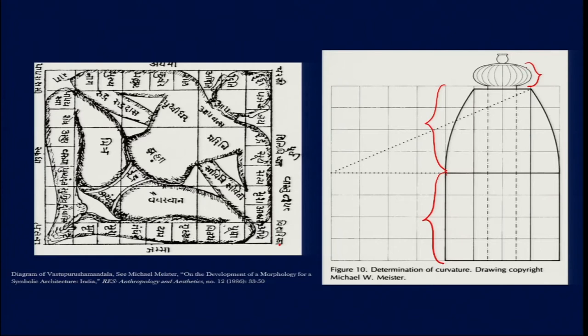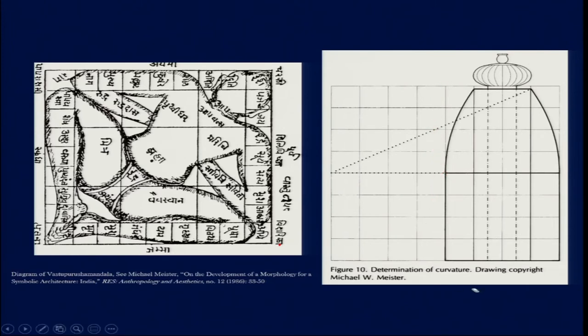On top of the shikhara we have a corbelled stone called the amalaka, which marks the space of the axis mundi. On top of that we usually find a kalasha, or finial. The kalasha is a marker of life, relating to the idea of creation associated with the god and goddess figures at the centre of the universe. The kalasha is also used in most Hindu rituals — from birth to marriage to death — bringing together symbols important in the Hindu belief system.